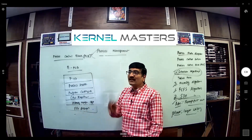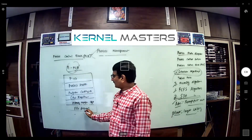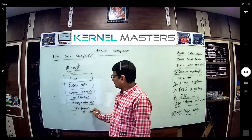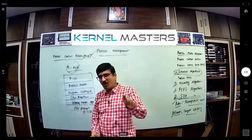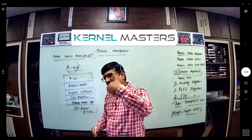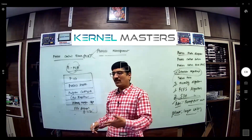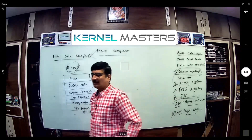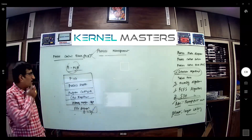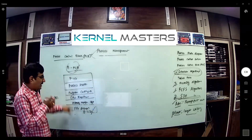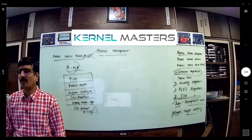Next, file descriptor information is also stored in the PCB — device information as well. Every running process by default has three file descriptors: 0, 1, and 2. Beyond that, file descriptors 3 or 4 are assigned by the programmer via the open system call. So all this information is contained in the PCB — that's why it's called the Process Control Block. Every process contains this information.